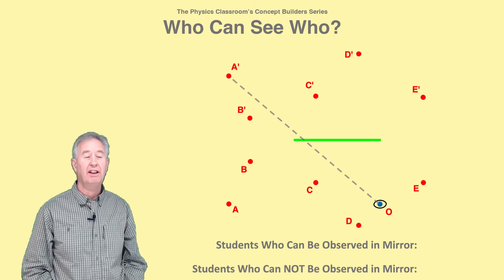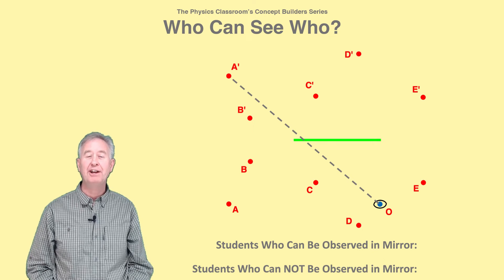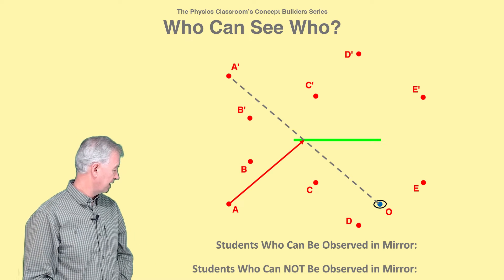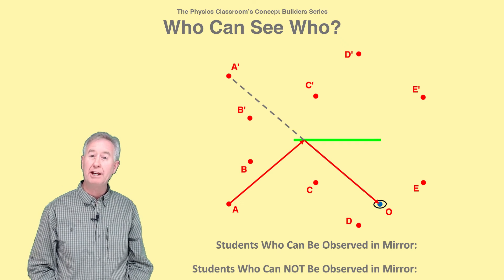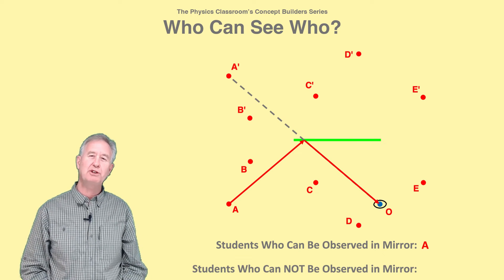For student A, a line of sight drawn to A's image intersects the mirror. So light from student A can reflect off the mirror and travel to the observer's eye. The observer can see student A.